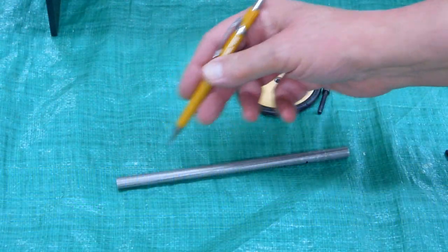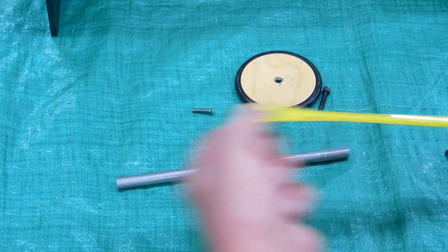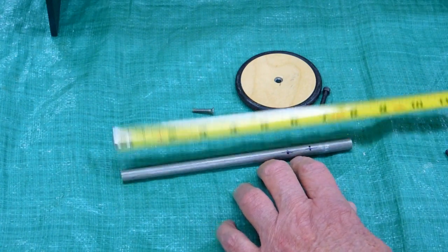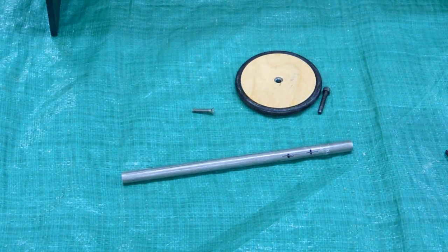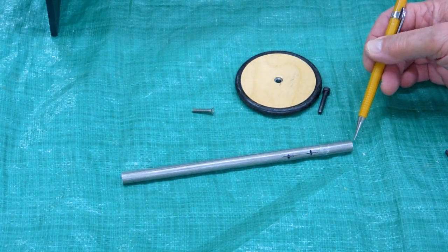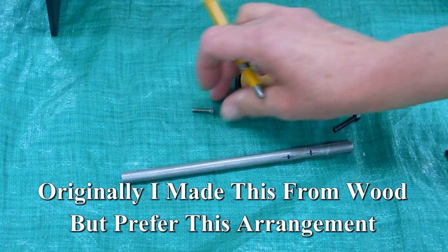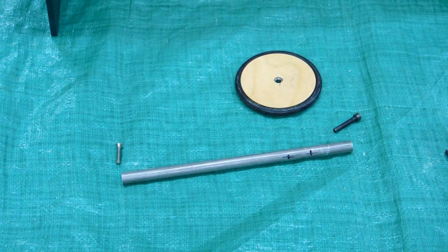This is a 3/8 inch diameter aluminum rod. It's 7 and 5/8 inches long. It was drilled and tapped for 8-32 on this end, and for 6-32 on that end.